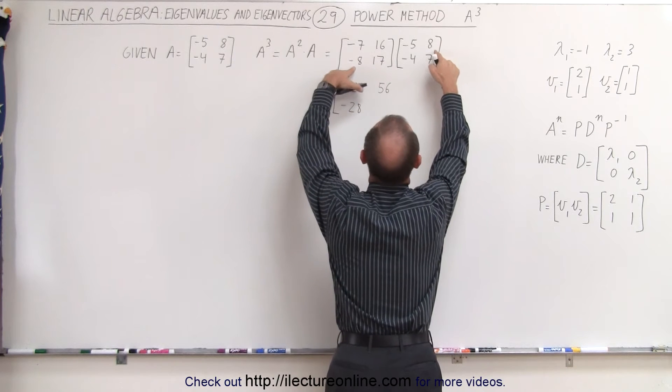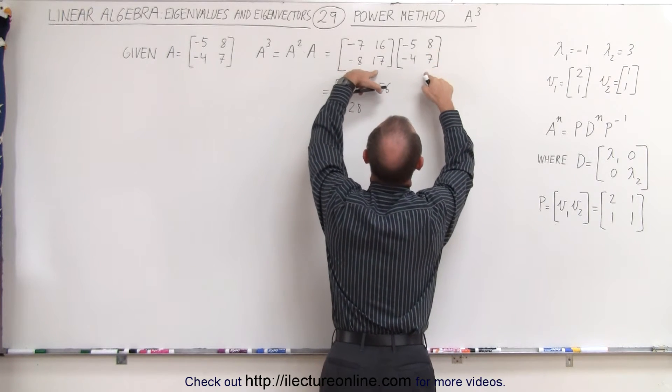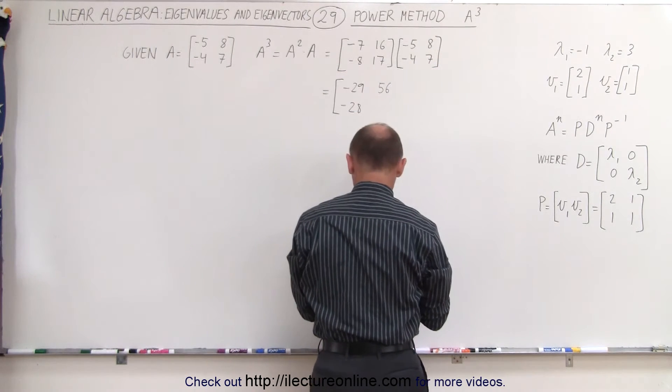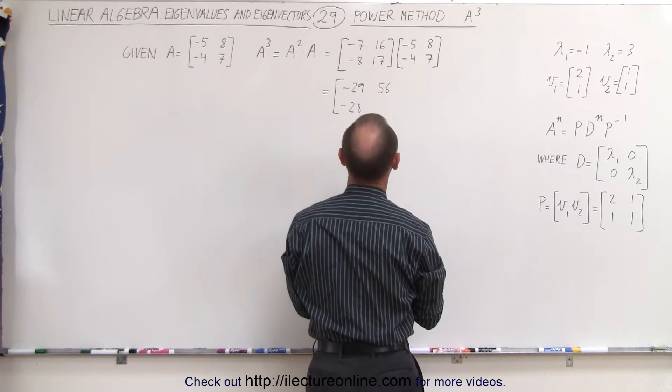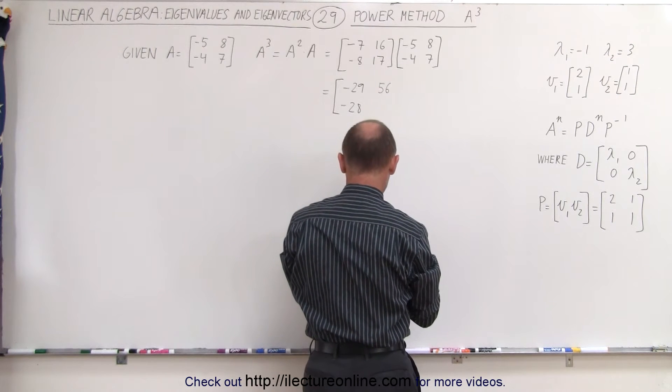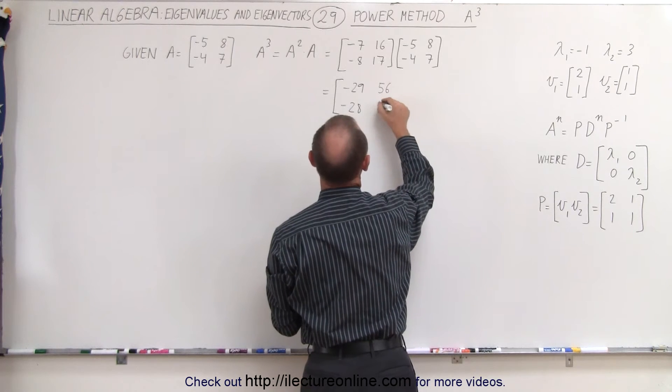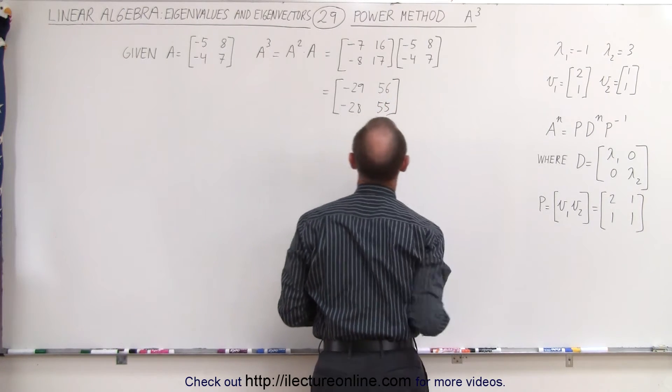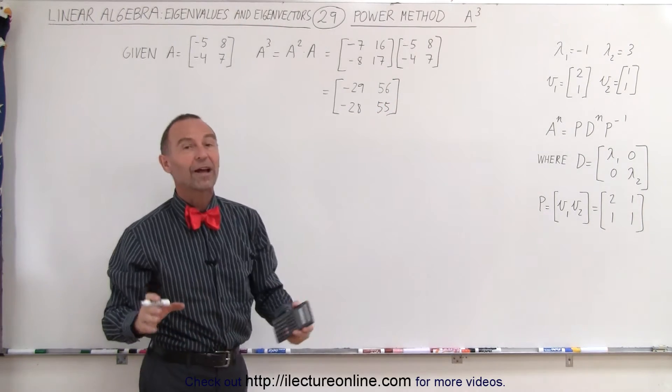And then here we have a negative 64 and a positive, well let's see here, 64 negative and plus 17 times 7 equals a positive 55. All right. So that's A cubed, the old-fashioned way.